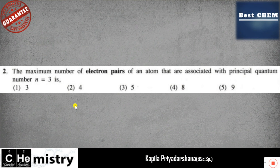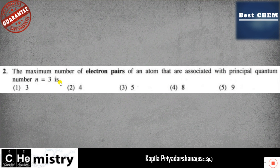They have asked us the maximum number of electron pairs — look here carefully, the electron pairs have already been highlighted — of an atom that are associated with the principal quantum number n equal to three. They have given five answer options for you.